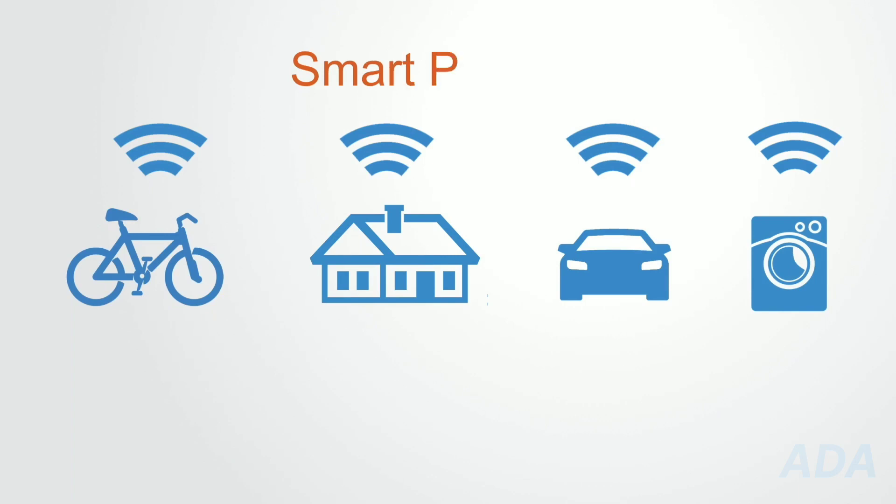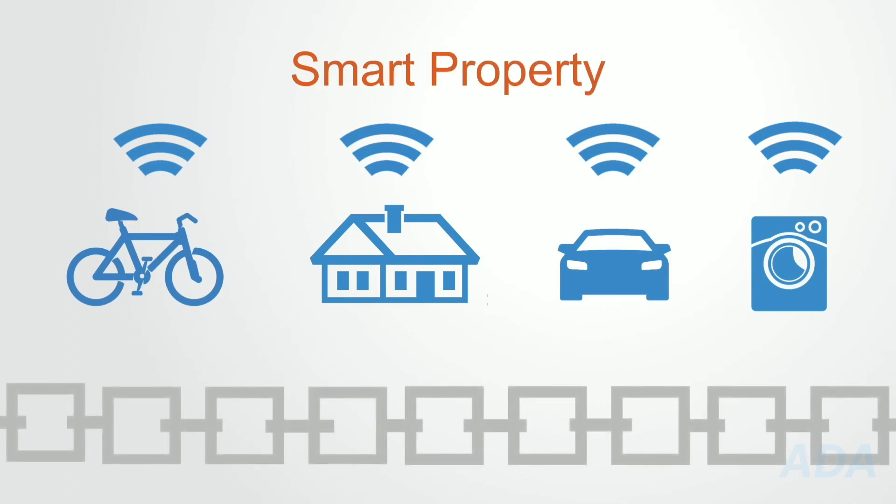In this system, all property could become smart property. This is the notion of encoding every asset to the blockchain with a unique identifier such that the asset can be tracked, controlled, and exchanged on the blockchain.